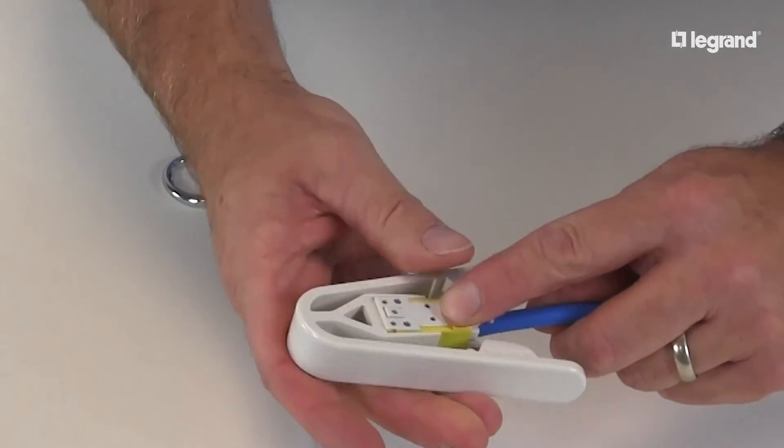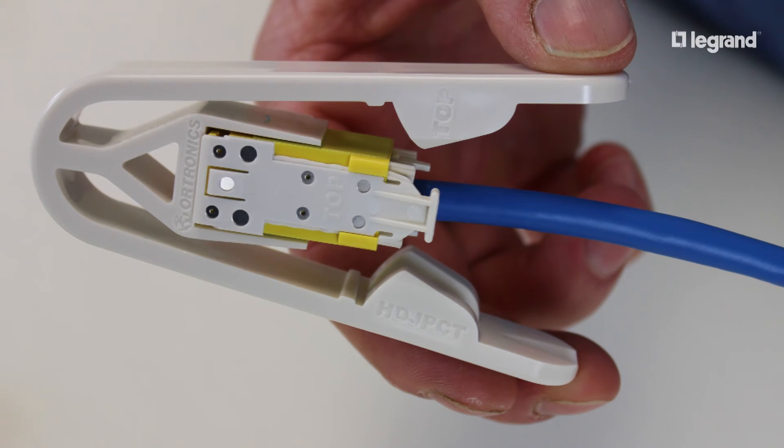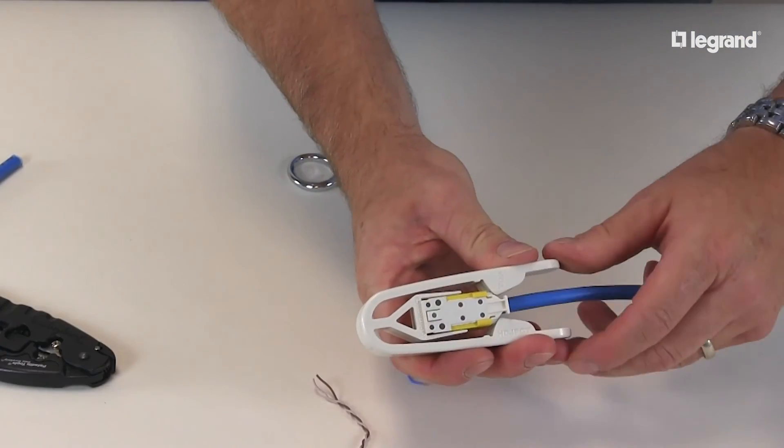To complete the termination, fully insert the assembled jack into the free termination tool like shown, making sure the top of the tool is facing you. Then squeeze the handles together until you hear a click.